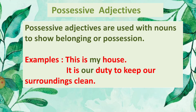The next type is possessive adjectives. Possessive adjectives are used with nouns to show belonging or ownership. For example, 'This is my house' and 'It is our duty to keep our surroundings clean.' Here 'my' and 'our' are possessive adjectives, and they are always followed by a noun — 'my house,' 'our duty.'